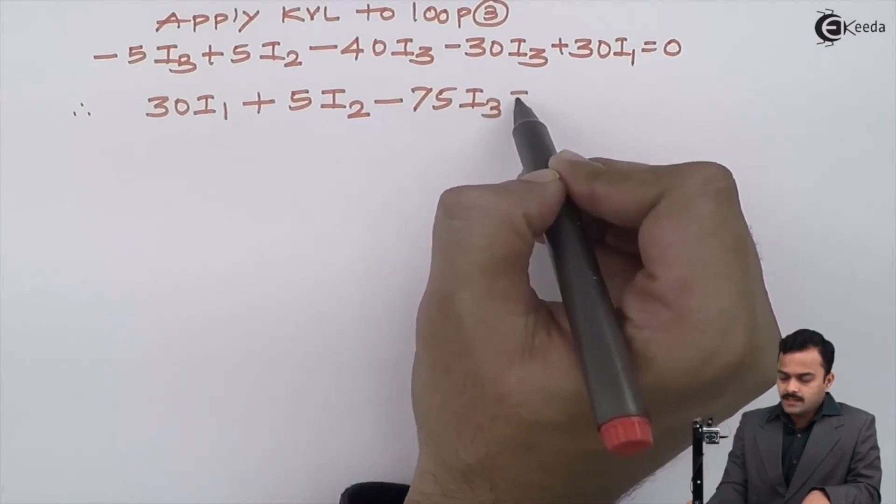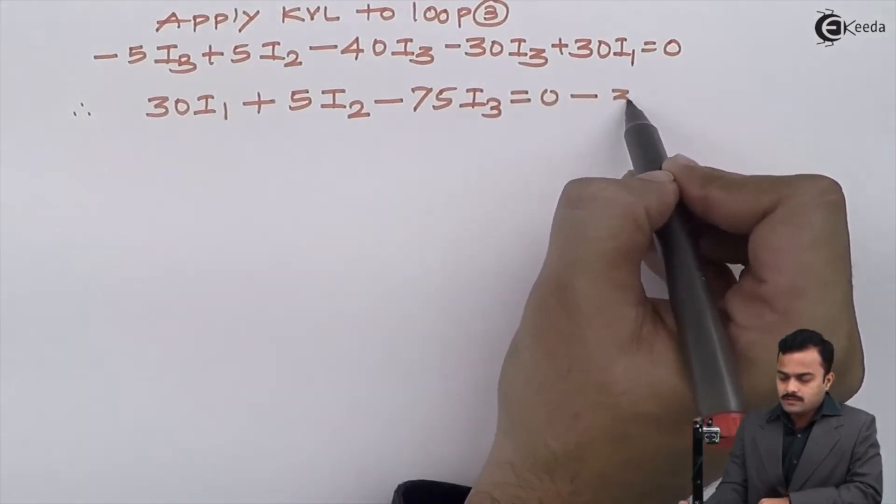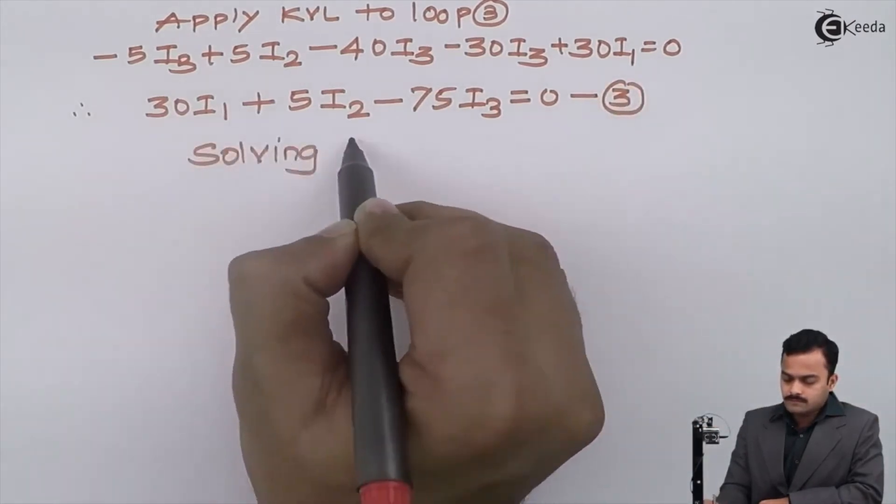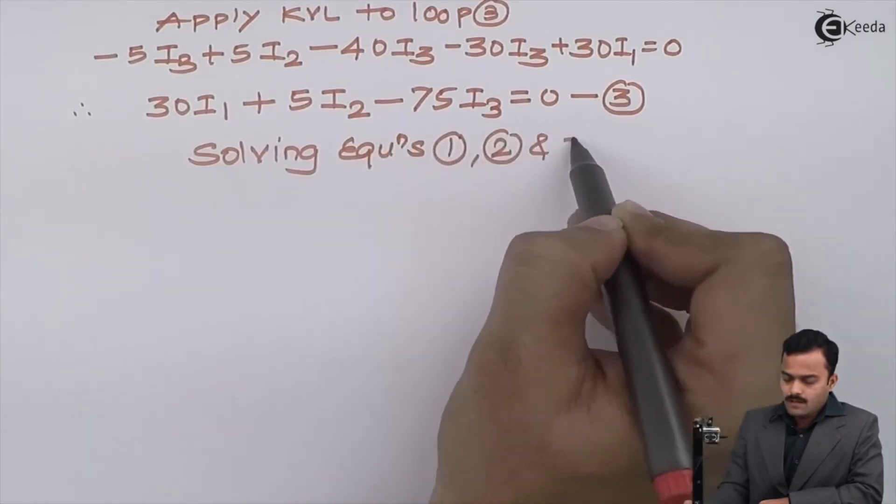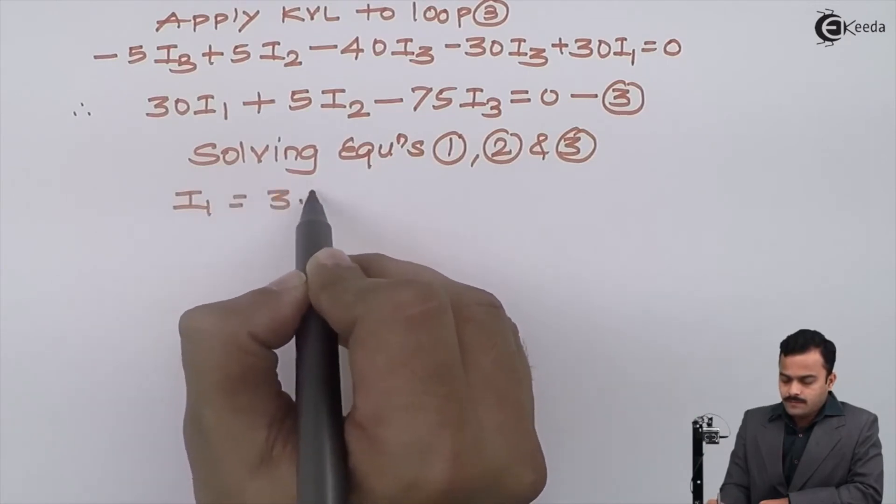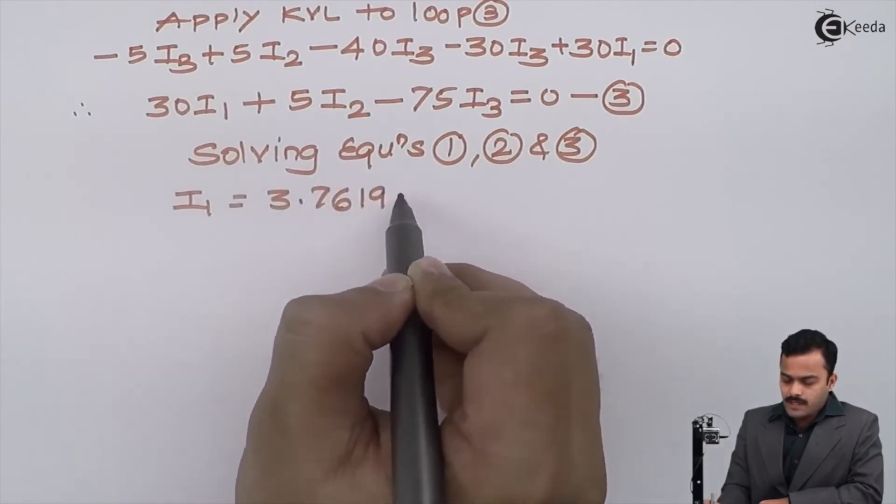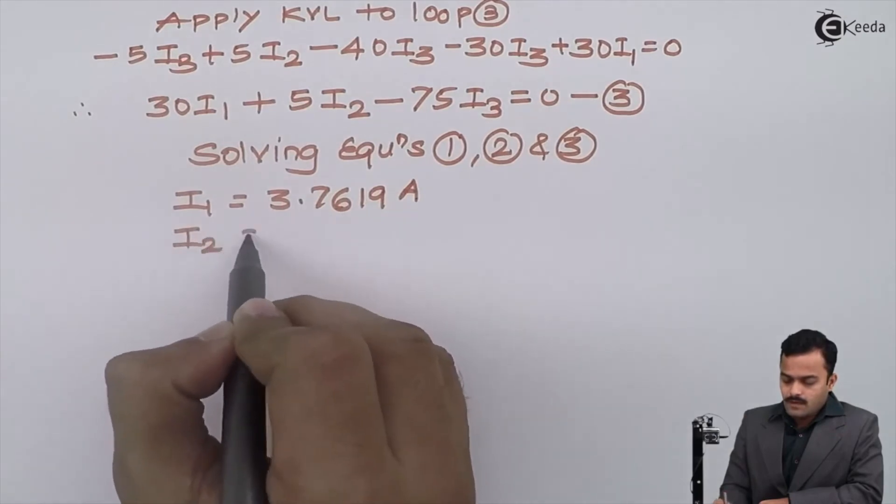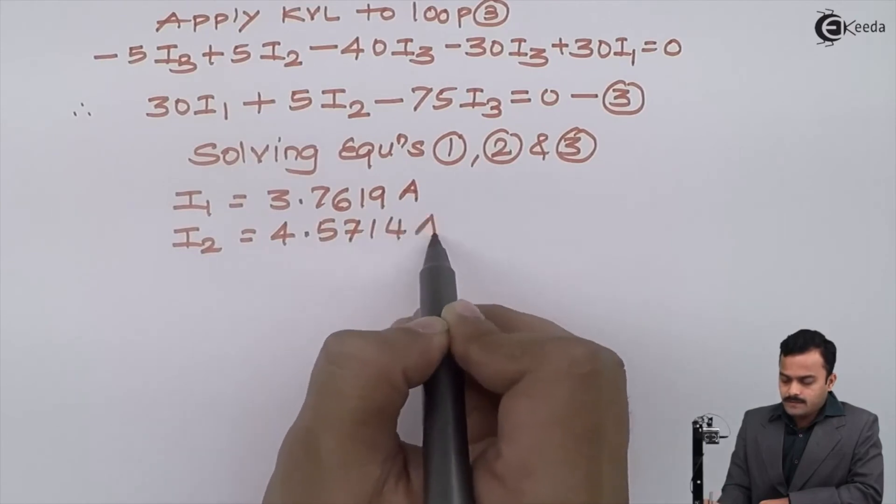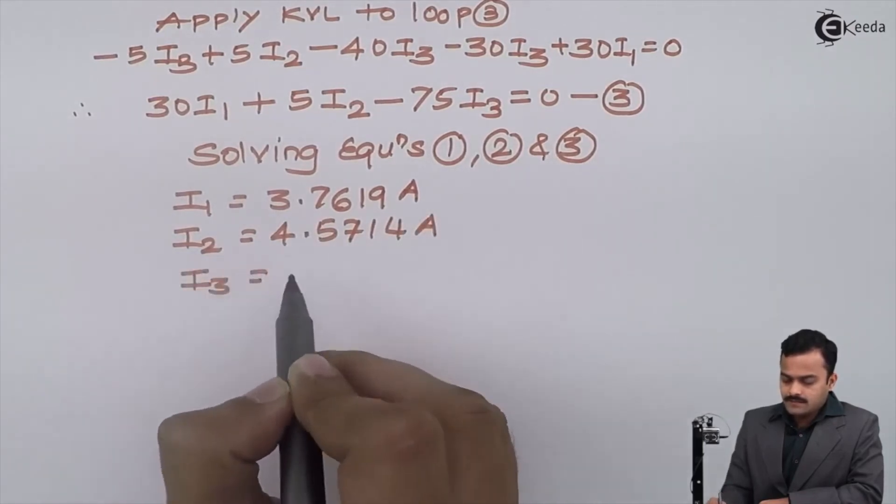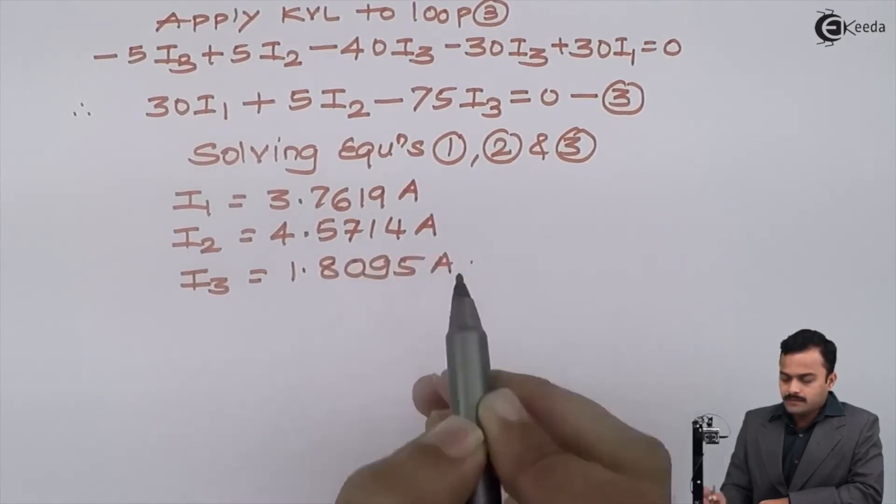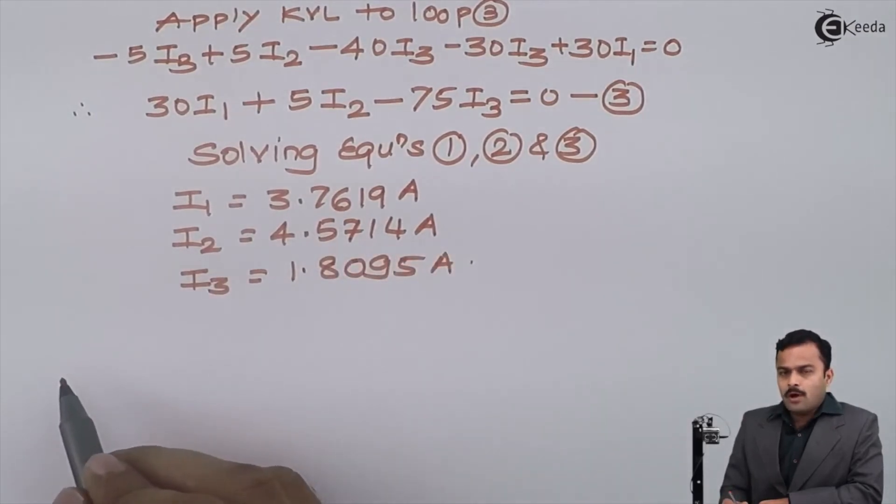So solving equation one, two, and three, I will get loop currents I1 as 3.7619 ampere, I2 as 4.5714 ampere, and I3 as 1.8095 ampere.